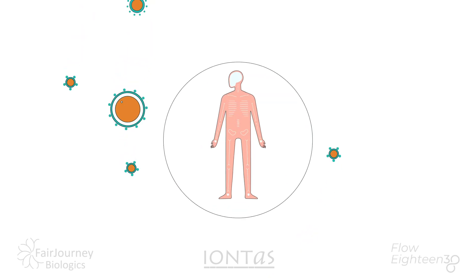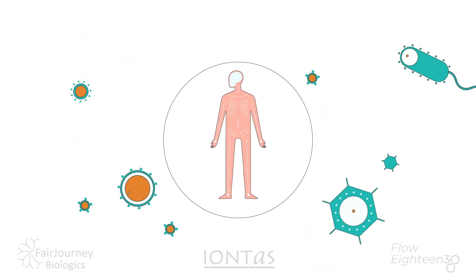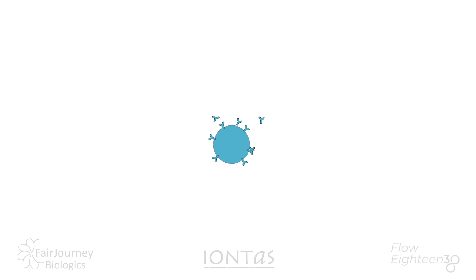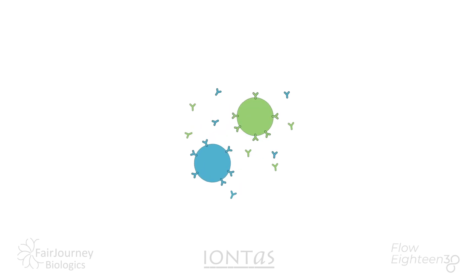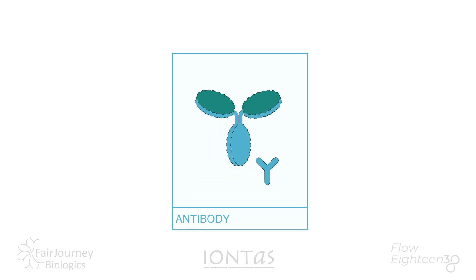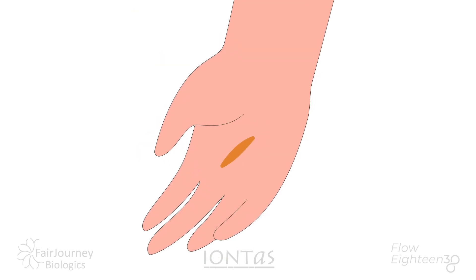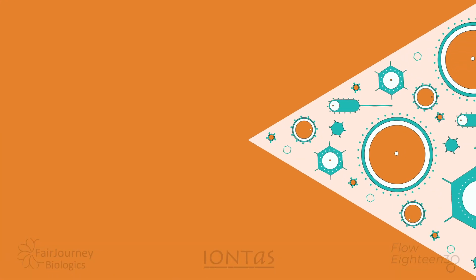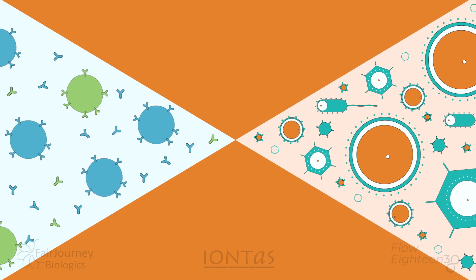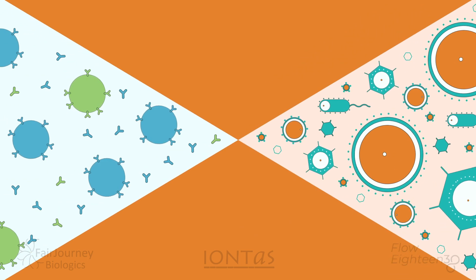Every day our bodies are under attack from bacteria, viruses and fungi. Over hundreds of millions of years, our immune system has evolved a range of systems to protect ourselves. One of the primary responses includes antibodies, which are naturally generated defence proteins. Their purpose is to recognise foreign organisms or molecules entering the body, bind to them and direct the forces of the immune system upon them.